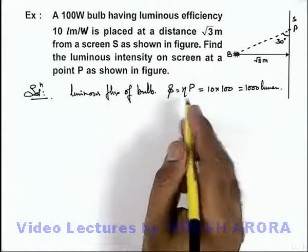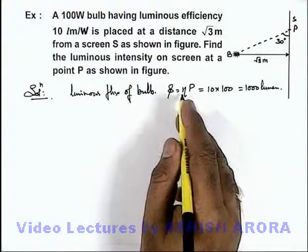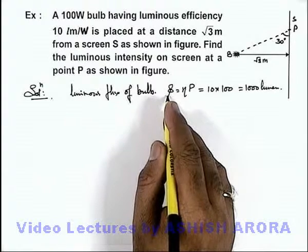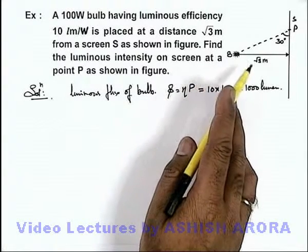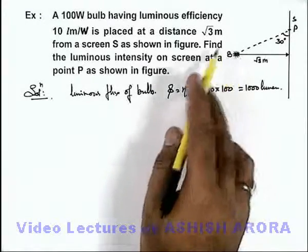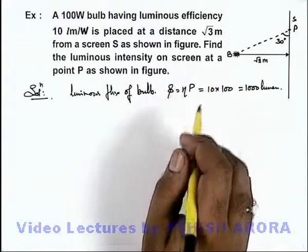And using luminous efficiency, as we have calculated the luminous flux, we can also calculate the luminous intensity of the bulb as it can be treated as a point isotropic source.